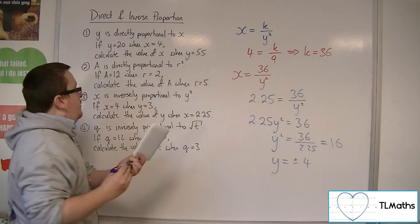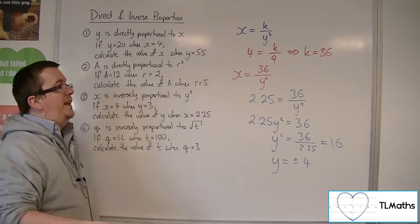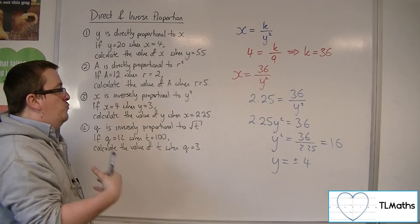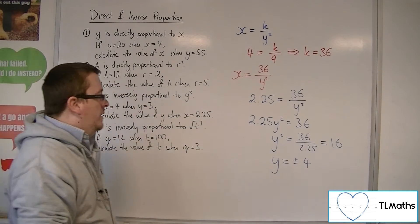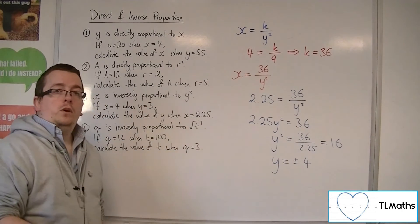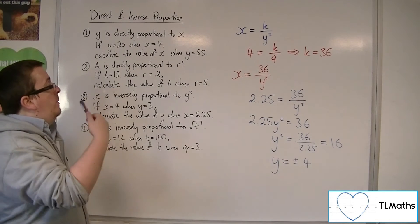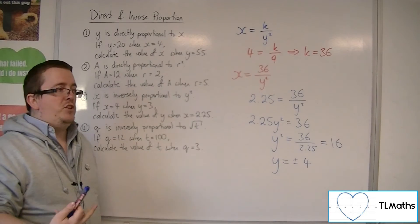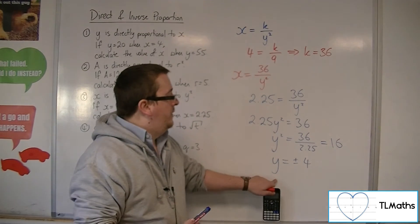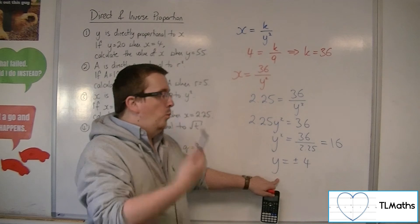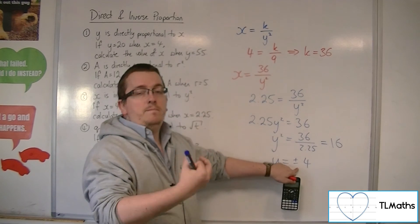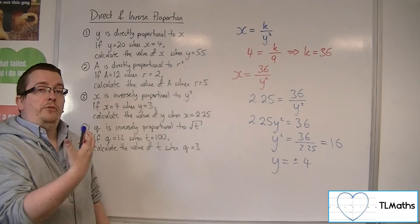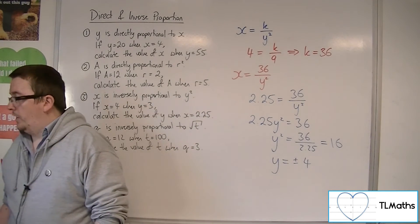Now, you've got to be a little careful when dealing with direct and inverse proportion. Really, when you're thinking about the context of the problem, can y be negative 4? In the majority of cases, when we're working with direct and inverse proportion, we are working in a contextualized situation, a real-life situation. So whatever y represents, if y was a length, for example, y would not be able to be minus 4. It would only be positive 4. So keep in mind, can the variables that we're working with be negative when we're looking at our answers?